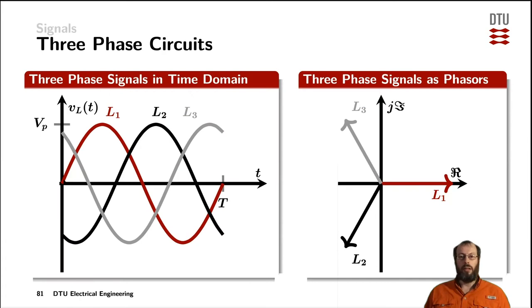Plotting these three signals in the time domain shows line one with the zero crossing at time zero, because it doesn't have any phase shift. Line two is shifted by 120 degrees in one direction, line three is shifted by 120 degrees in the other direction, where we can see that the signals start repeating at the period time uppercase T.